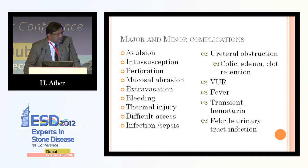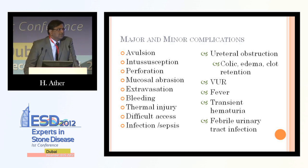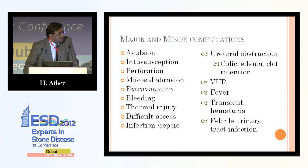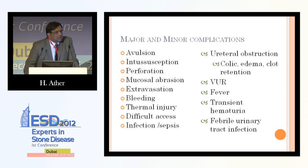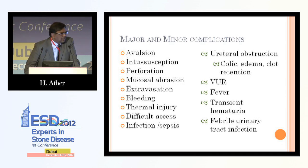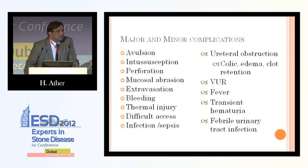Ureteroscopy is versatile, but ureteroscopy is associated with complications. We have traditionally been classifying these complications into major and minor. The dividing line is rather arbitrary — really whether we require a surgical procedure or an intervention to deal with these complications, which are termed major. Most other complications, managed medically or by conservative means, are called minor complications.